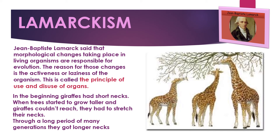Another theory is Lamarckism, proposed by John Baptiste Lamarck. He had two theories: first, that the morphological or visible changes taking place in living organisms are responsible for evolution, and the reason for these changes is whether the organism is active or lazy — called the principle of use and disuse. To prove this, he gave the example that giraffes originally had short necks, but as trees grew taller, giraffes stretched their necks, and through many generations, giraffes today have longer necks.